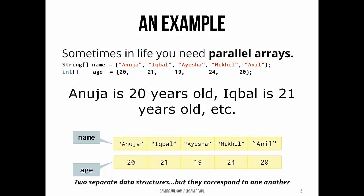So as an example, suppose I have Anuja, Iqbal, Aisha, Nikhil, Anil, and I have their ages 20, 21, 19, 24, 20.